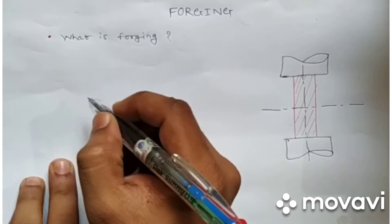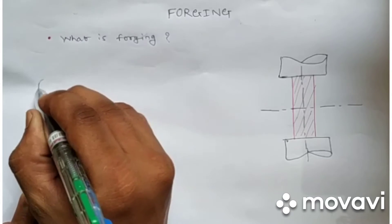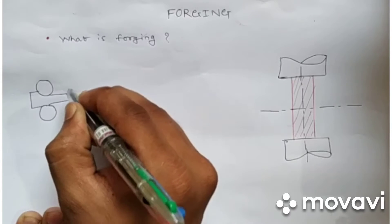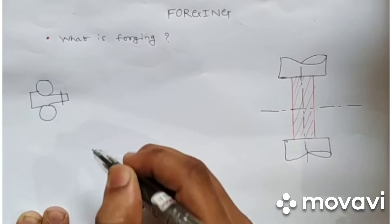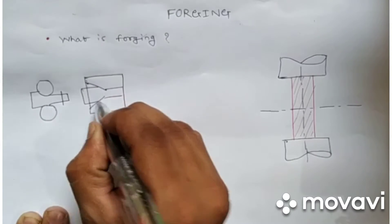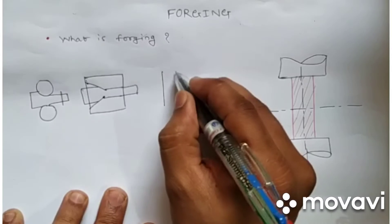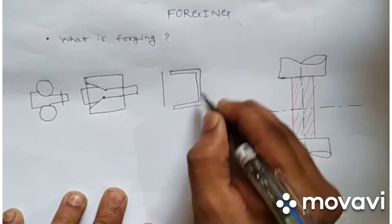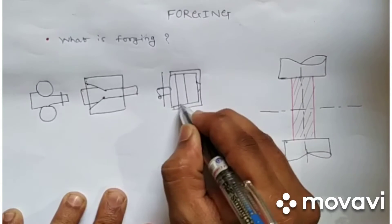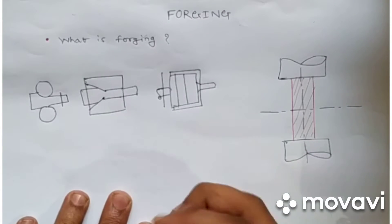In the rolling operation, we have rollers and we pass the material through the roller, and it comes out with a uniform cross-section. In wire drawing, we have a die through which we pass the material. In extrusion, there is a die with an opening and the material is pushed with the help of a ram, so again the material comes out of the die.